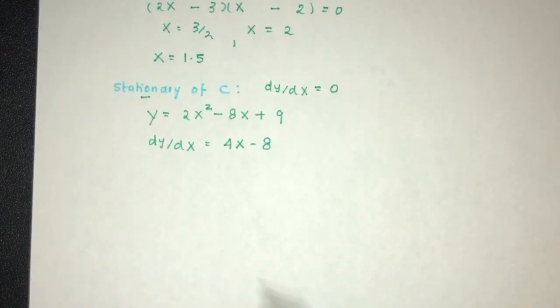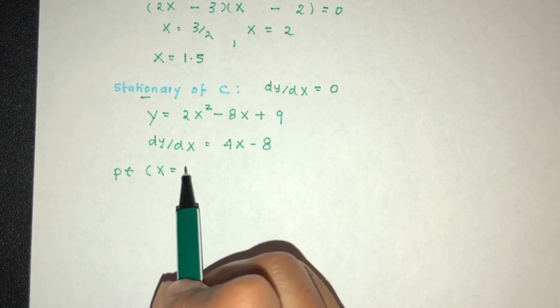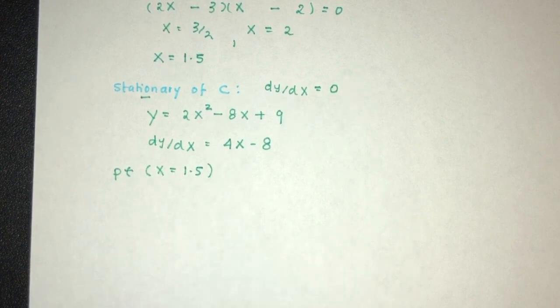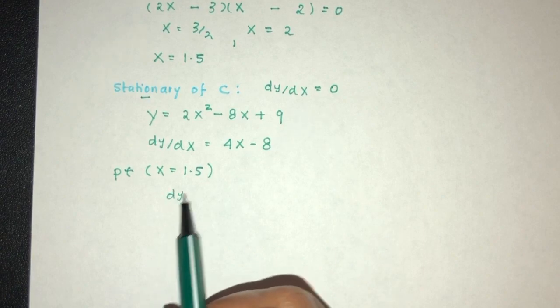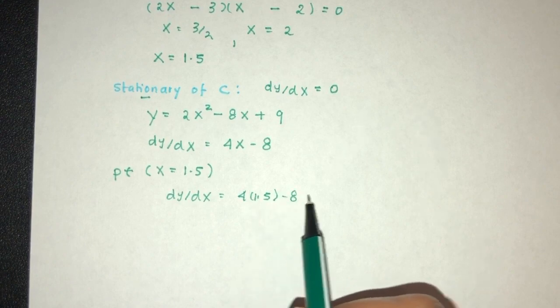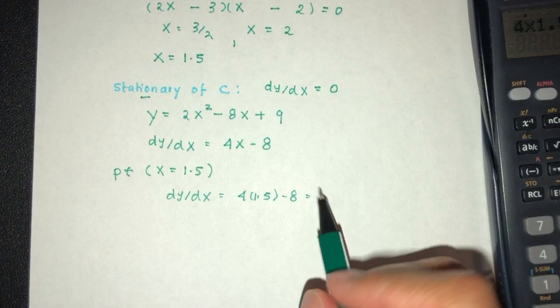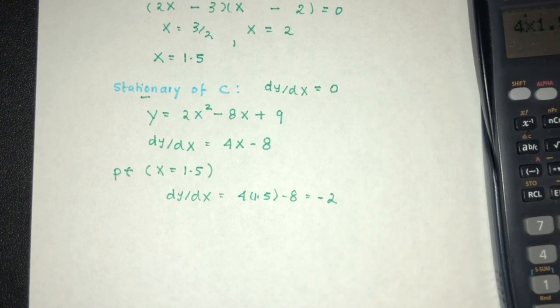Now we have to check. For the point where the value of x is 1.5, let's see what happens. So dy by dx at 1.5 is 4 times 1.5 minus 8. That will be minus 2. So it is not good.